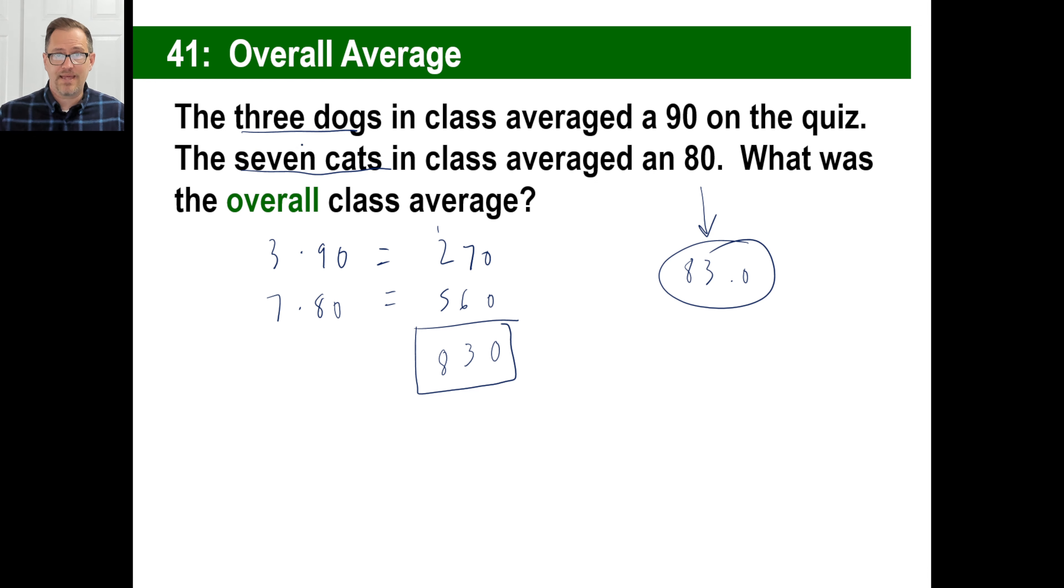Now, if we had flipped that, where we had seven dogs averaging a 90 and only three cats averaging an 80, that would have skewed the overall class average closer to 90 because there were more dogs scoring that. So that's overall. You figure out how many points total did one group score or cost or whatever, how much did the others, and then add it all, divide by the number that you have. Let's do another one.